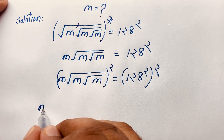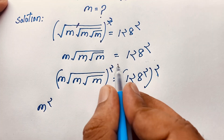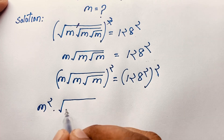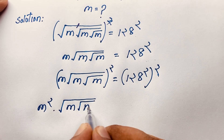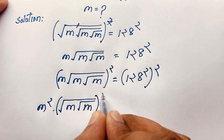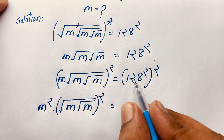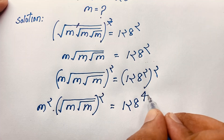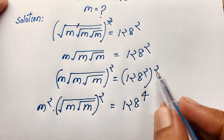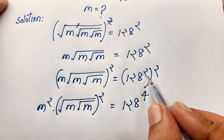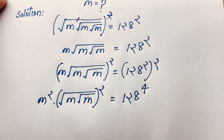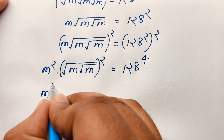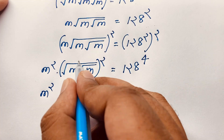Now you can see it will be m to the power 2, times square root of m, times square root of m, times square root of m, and the bracket power is 2, equal to 128 to the power 2 times 2, which is 4. According to exponential law, 2 times 2 equals 4. Now we have m to the power 2 and the square root.